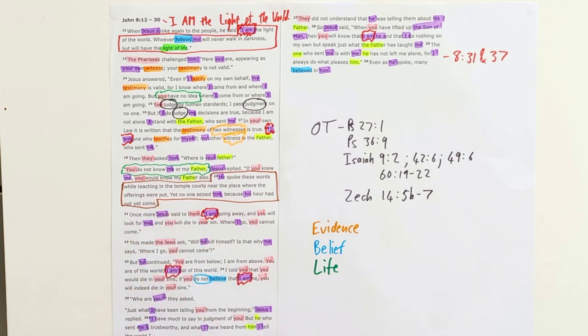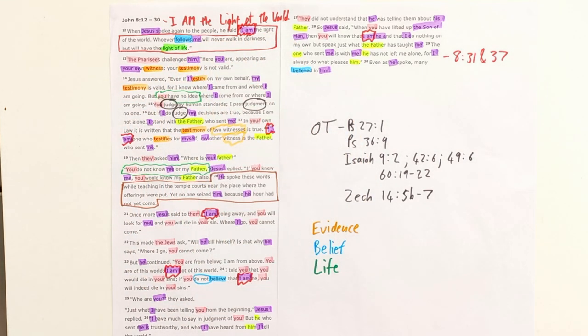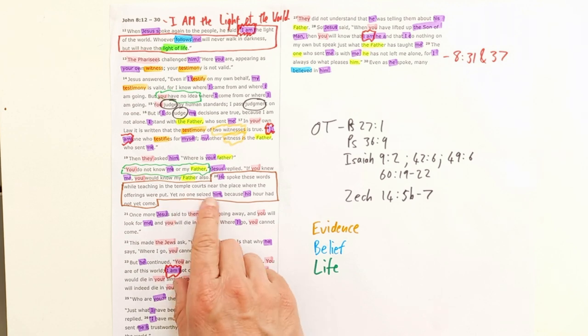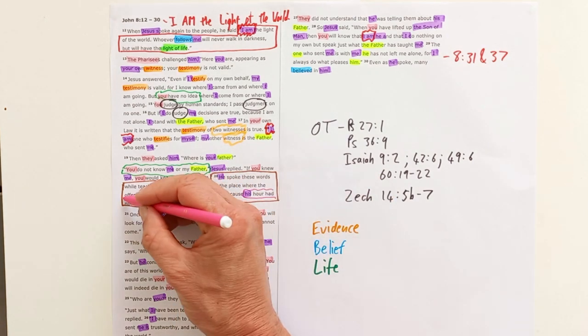And in the temple courts close to where the offering was put, one of these lights was right there. So Jesus is standing there with one of these huge lamps blazing, casting lights over Jerusalem, and he says 'I am the light of the world.' The people don't believe his testimony about himself, but then we're told no one seized him because his hour had not yet come.